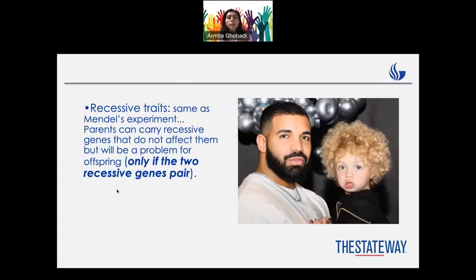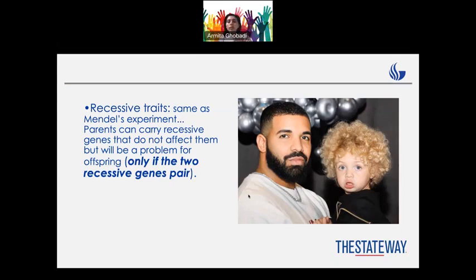Another example of recessive genes is about Drake. His appearance is very different from his child — the child is blonde with green eyes. This may be because Drake carried recessive genes for green eyes, but since his dark eye gene was dominant, it didn't show up in him. But it was passing along, and we can see it in his child.